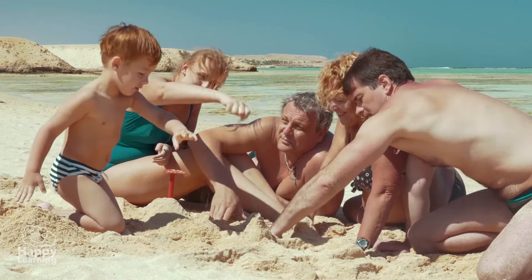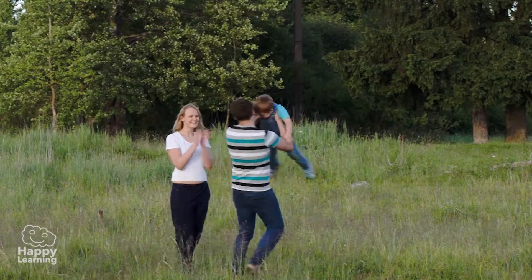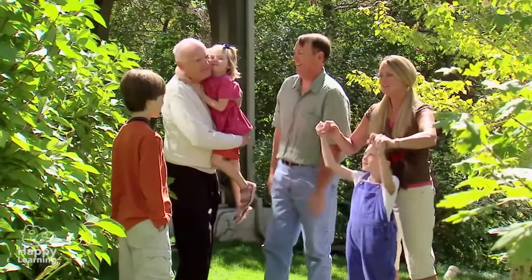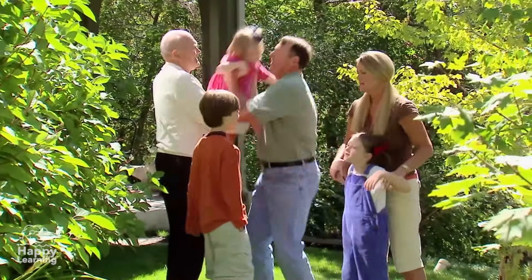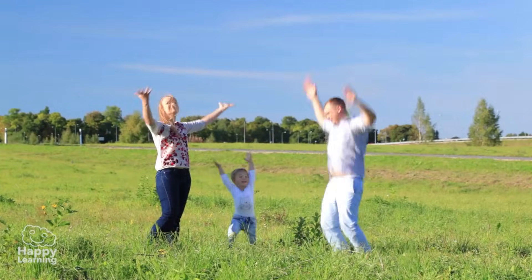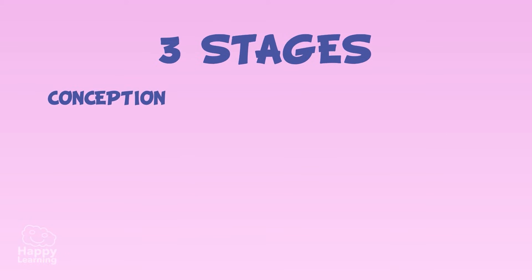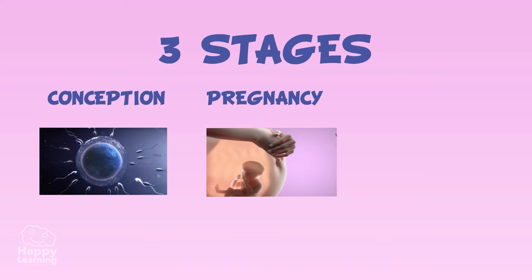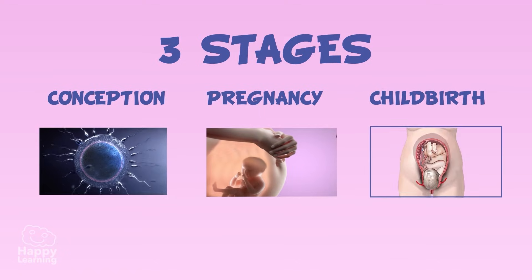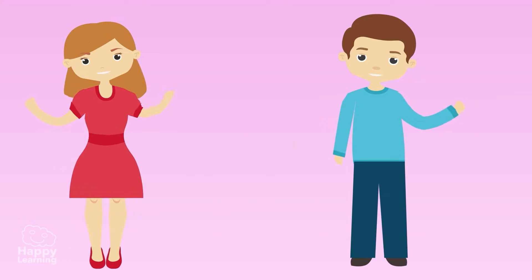Hello friends and welcome to a new Happy Learning video. Today we're going to learn about our origin. Human reproduction develops in three stages: conception, pregnancy, and childbirth.